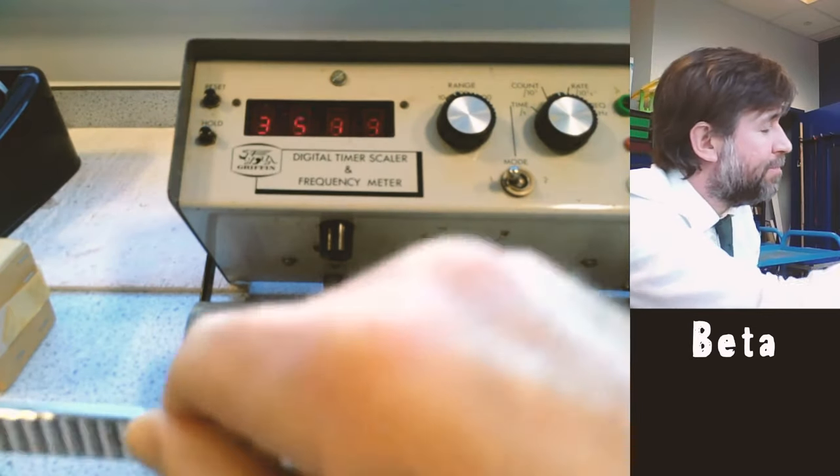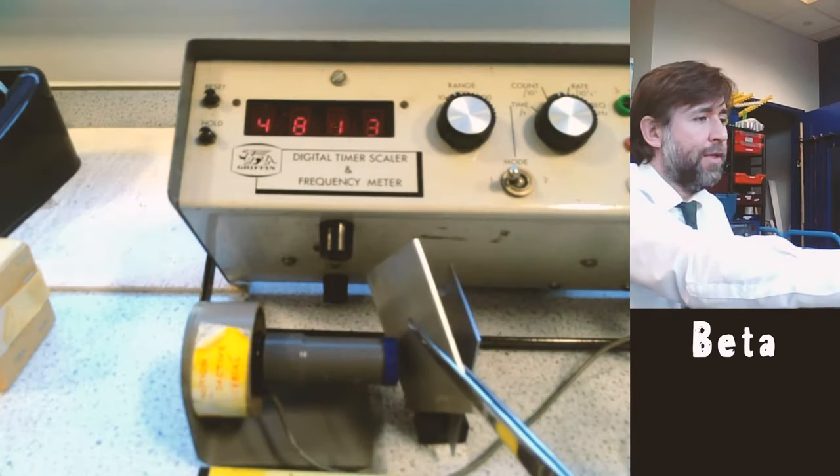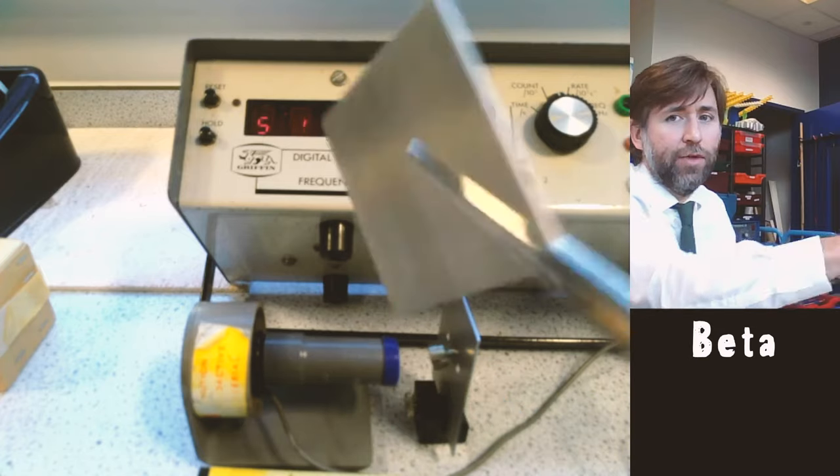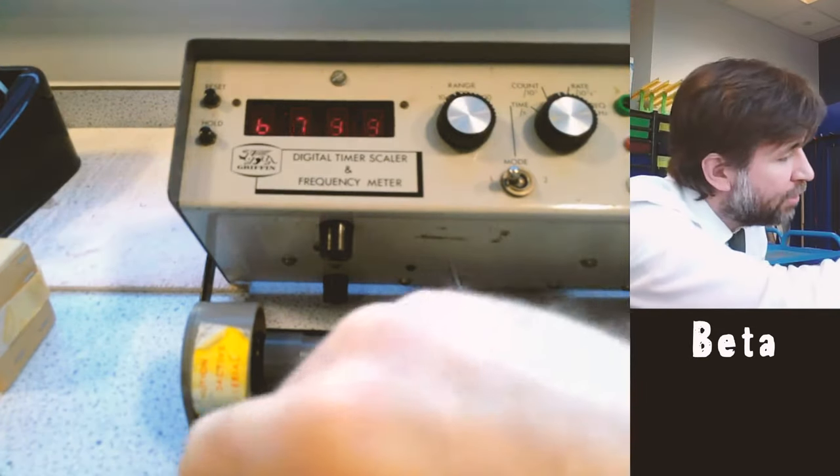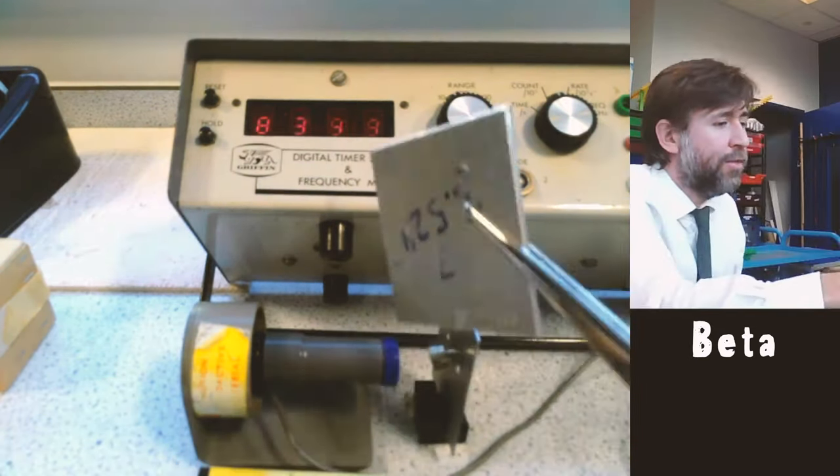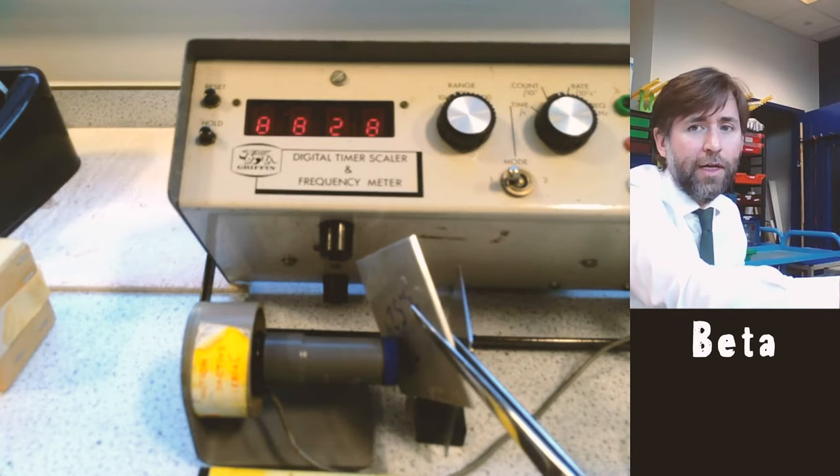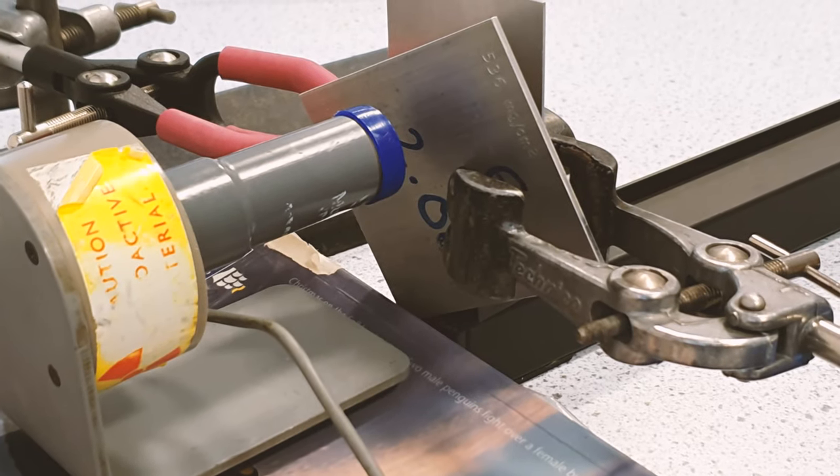Put one millimeter of aluminium in, and there is a decrease but they're not all stopped. Two millimeters aluminium, and you can see that's blocking all of the beta particles essentially. Beta can be stopped by just two millimeters of aluminium.